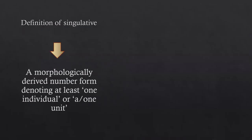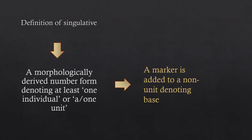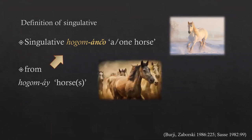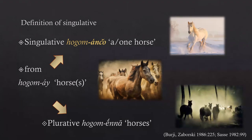But what is a singulative? It's a morphologically derived number form denoting at least one individual or one unit, in which a marker is added to a non-unit denoting base. For example, in the language Burgi, we have the singulative form Chogomancia meaning 'one horse', derived from Chogomai meaning 'horses' or 'horse' — we don't know. And just to give the entire paradigm, the plurative form is Chogomenna, meaning 'horses'.